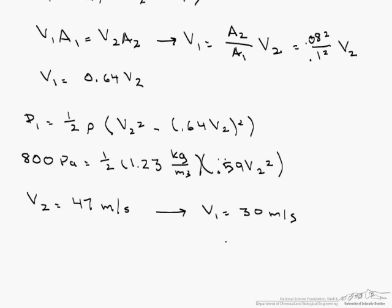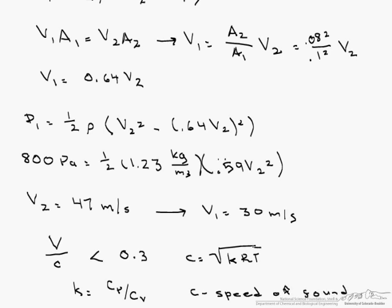So how could we tell if we can really make that assumption that it is incompressible? Well if we use the relationship that v over c has to be less than 0.3, and our c can be found by finding the square root of k times r, the gas constant, times t. k is just the ratio of the specific heats. So in order to calculate this, we would have to know the temperature, where c is the speed of sound. But if you look at our velocity, and look at that square root of krt, it looks like at most of the temperatures that this would occur at, that the Mach number or v over c is less than 0.3, and we can assume incompressible flow.